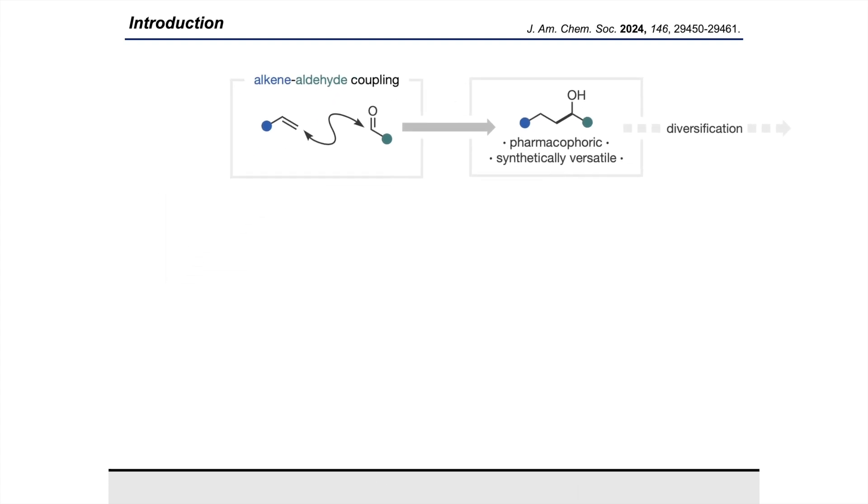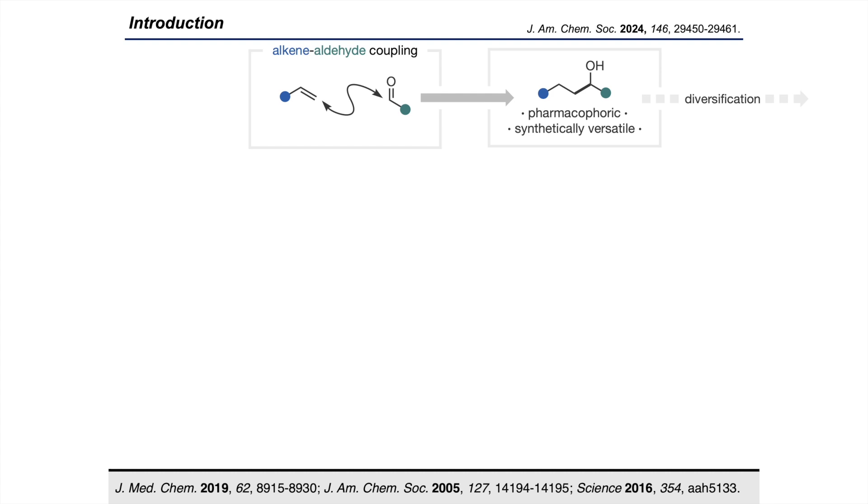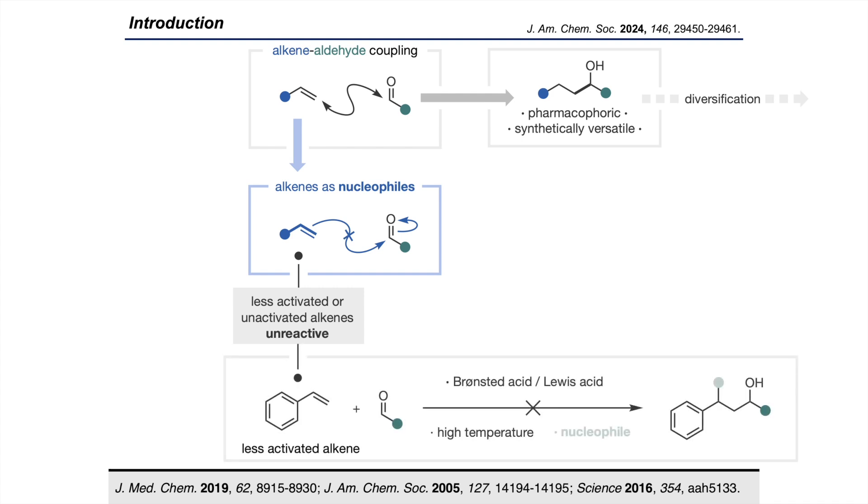A really underutilized way of forging a C-C bond between these two fragments is to use the alkene as a nucleophile. This is all well and good for activated alkenes such as enolates or silyl enol ethers, but for less activated or unactivated alkenes such as styrenes or alpha olefins, the pi bond just isn't nucleophilic enough on its own. This is exemplified by the archetypal Prins reaction, wherein intermolecular cases not even forcing or corrosive conditions could get a less activated alkene to add into an alkyl aldehyde.